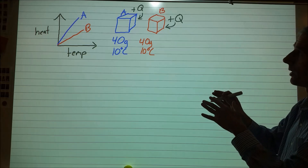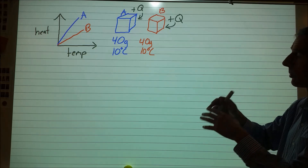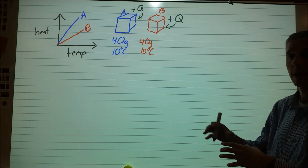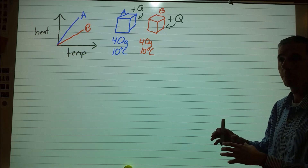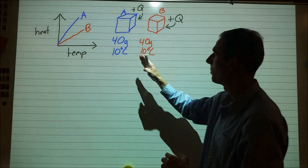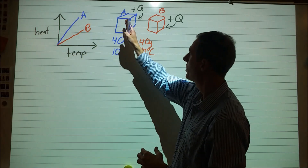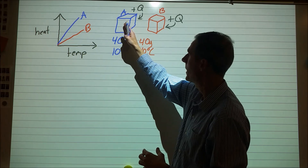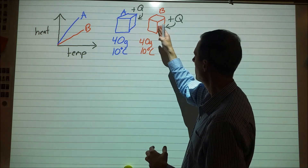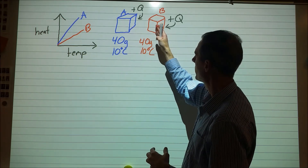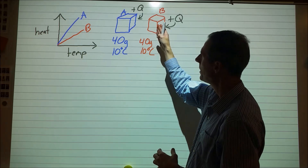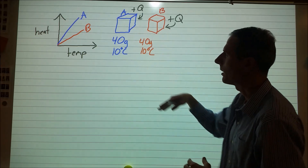What we're seeing here is that when we apply energy to a substance, the temperature changes are not the same. That could be tricky because it means we're putting a certain amount of energy into the particles of A and they're changing how they move, but we're putting the same amount of energy into particles of B and for some reason they're changing to a different speed.